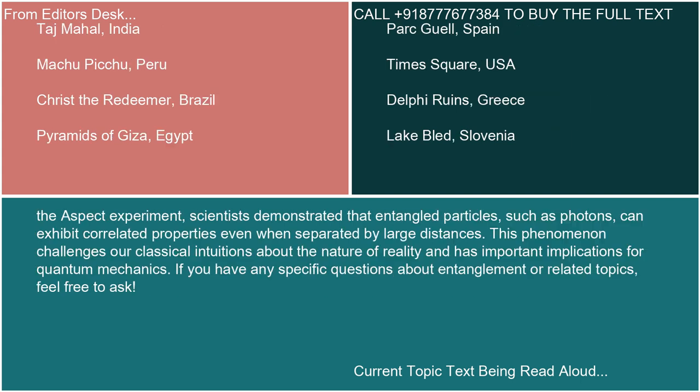In the Aspect Experiment, scientists demonstrated that entangled particles, such as photons, can exhibit correlated properties even when separated by large distances. This phenomenon challenges our classical intuitions about the nature of reality and has important implications for quantum mechanics. If you have any specific questions about entanglement or related topics, feel free to ask.